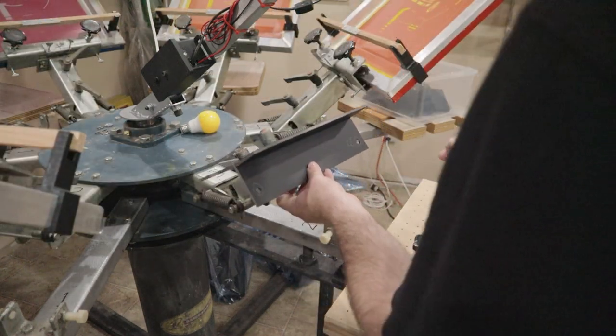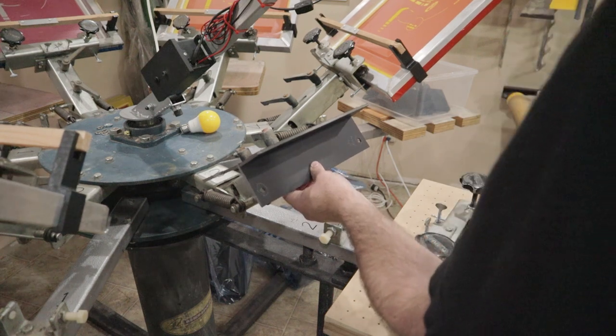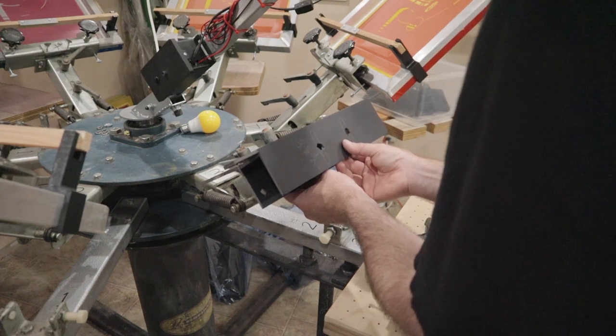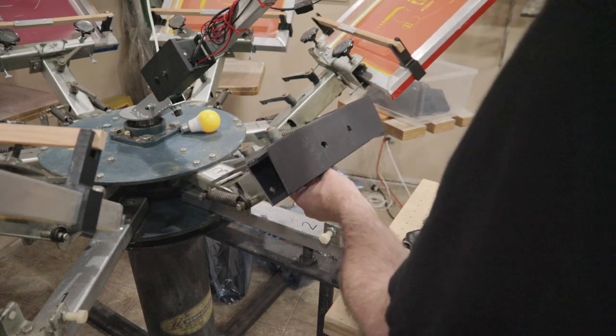The problem I have with my press now is that when I tighten the screen clamps, the registration shifts. I've welded a connecting piece between the two clamp knobs to mitigate this effect, but it didn't remove it entirely.